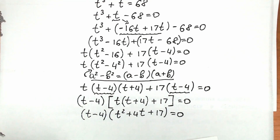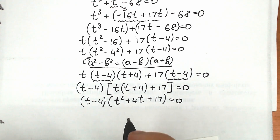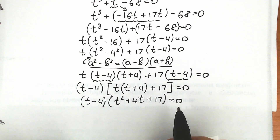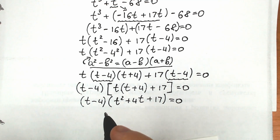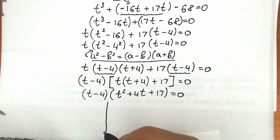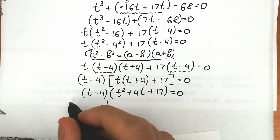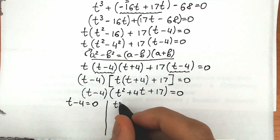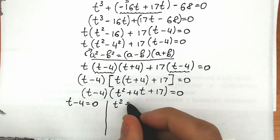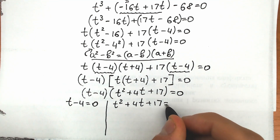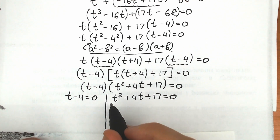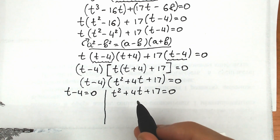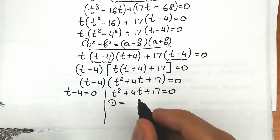Finally we've factored our equation into two parentheses. If a product of two terms equals zero, then each factor can equal zero. So we split into: first, t minus 4 equals 0; and second, t squared plus 4t plus 17 equals 0. Let's start by solving the quadratic using the discriminant.